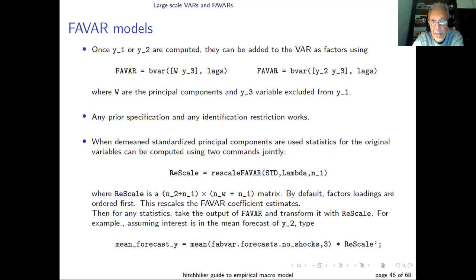Now, when you use principal components and you standardize the data before calculating a principal component, you need to rescale the estimates to take that into account. And this is done with the function FAVAR, which basically takes as input the standard deviation, the eigenvalues, and the number of factors. This rescales the coefficients. And with that, you can rescale forecasts and impulse responses. For example, if you want to forecast and you have no shocks, you use this output subfield, take the mean, and rescale it as I've done here.